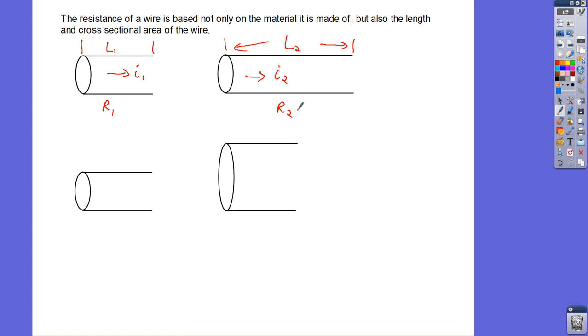So the longer the wire is, the more resistance you have. So that means that R2 would be greater than R1. So the amount of resistance in a wire depends on how long the wire is. Hopefully that kind of makes sense. If you think about this, okay, same wire, same material. But now let's talk about the area here.